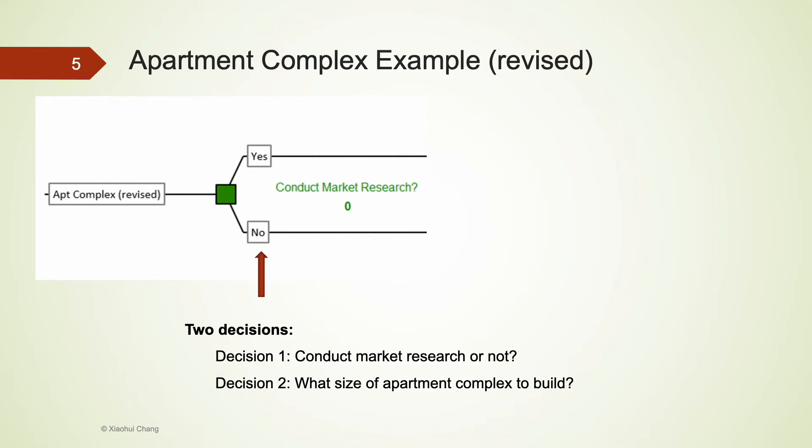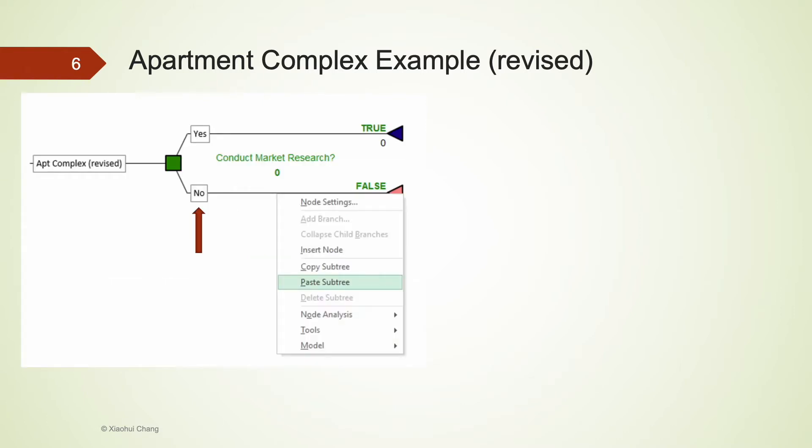We consider the easier alternative first—that's not to conduct market research. When the company decides not to conduct market research, then we follow the no path to reach the next decision node, where the company needs to decide on the size of the apartment complex. If you think carefully about this problem, the rest of the decision tree is identical to the decision tree in our original single-stage decision problem.